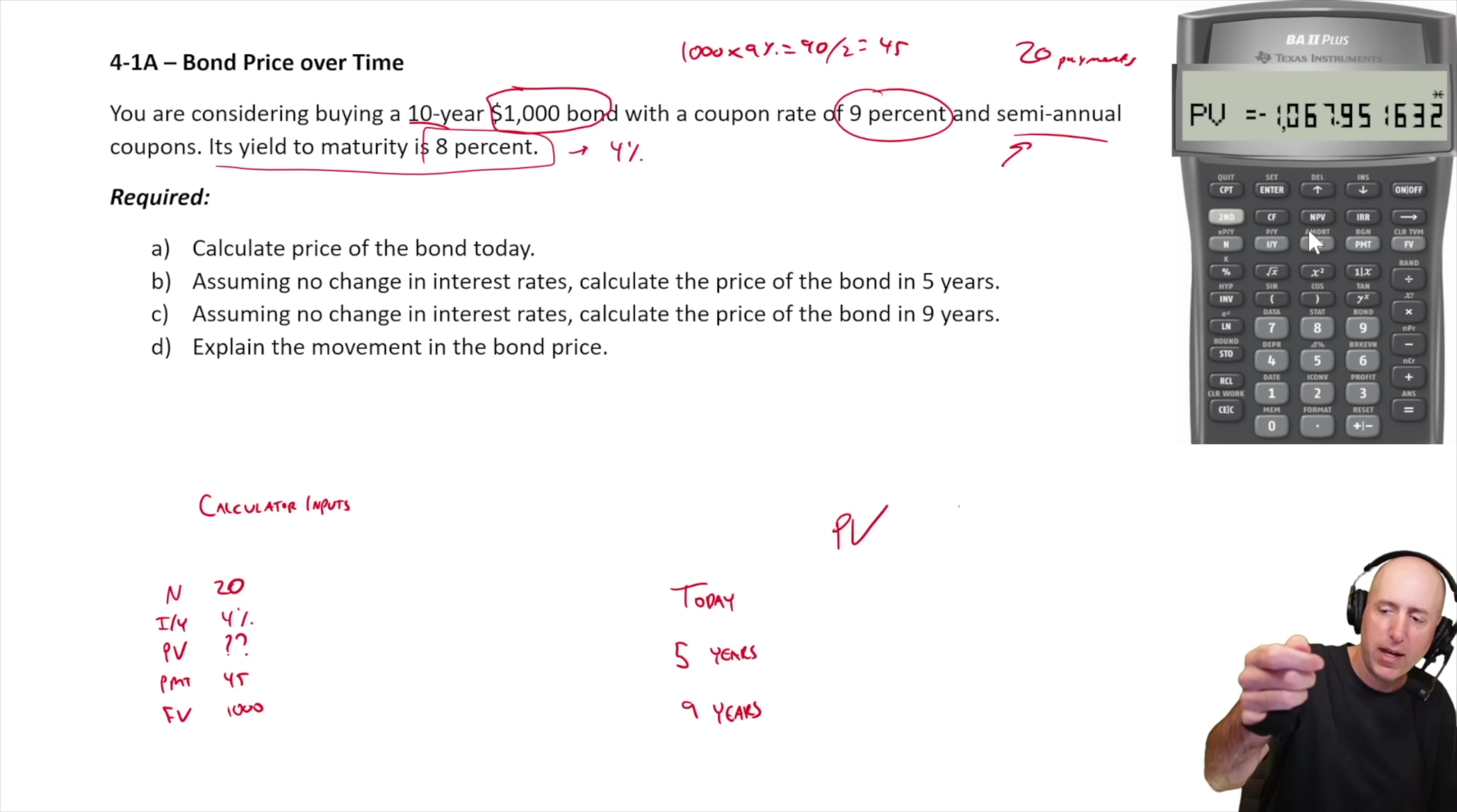And the answer is I got to pay 1067 to get those cash flows. That's the value of those cash flows today, 1067.95. And this is not a surprise that it's more than a thousand dollars. The reason is the coupon rate 9% is higher than the yield to maturity 8%. It means our coupon is going to be attractive and people will pay a premium. This is a higher coupon rate than the risk level of the bond might dictate. People will pay a higher amount for it. There's a premium of $67 on this bond.